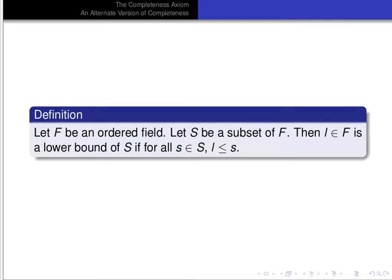Let's recall some definitions. If F is an ordered field and S is a subset of the field F, then an element L in the field F is a lower bound of the set S if for all s in S, L is less than or equal to s.